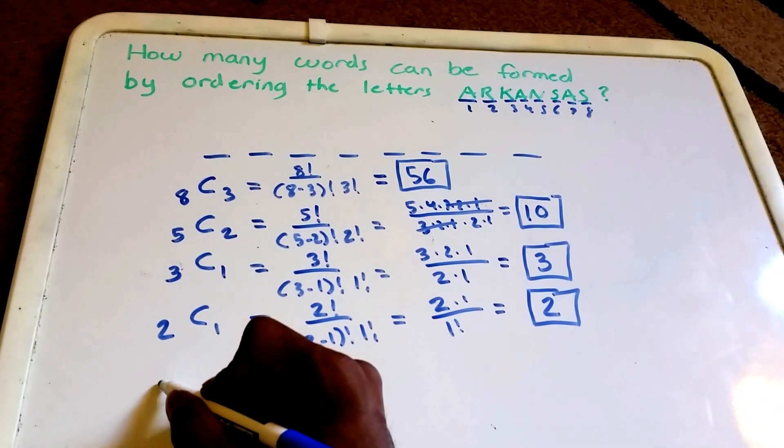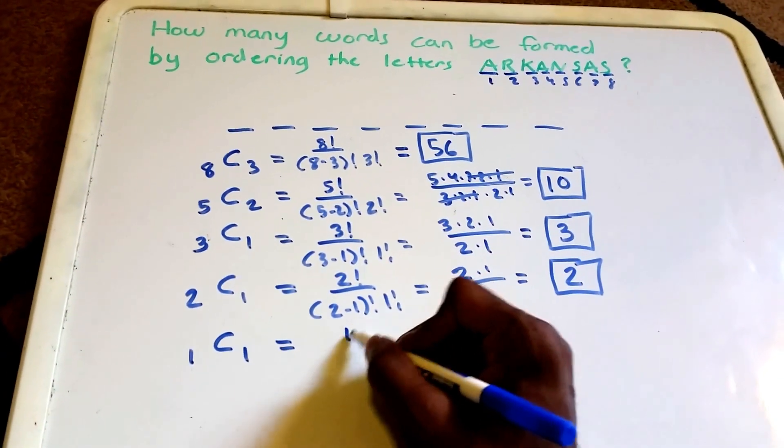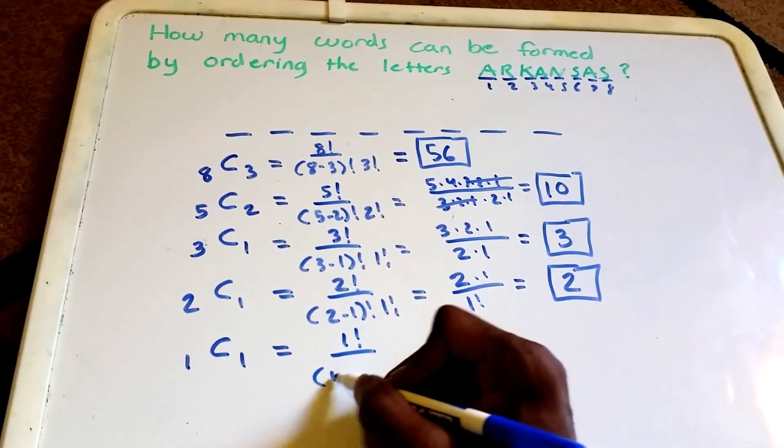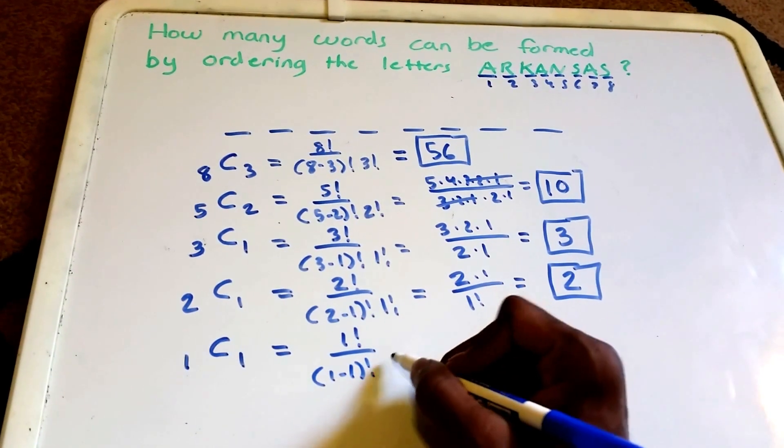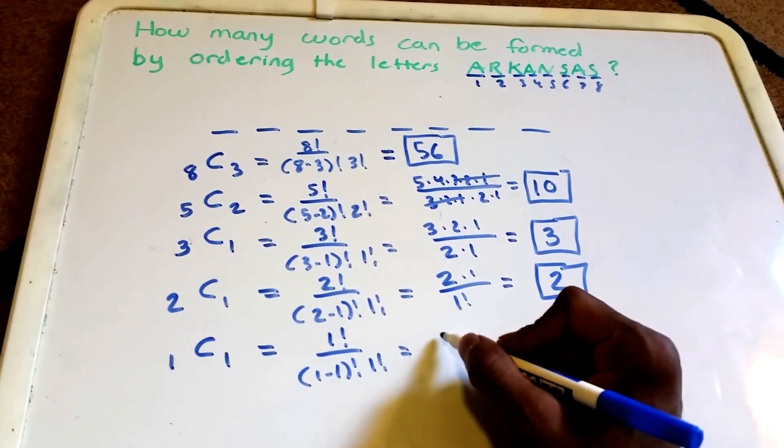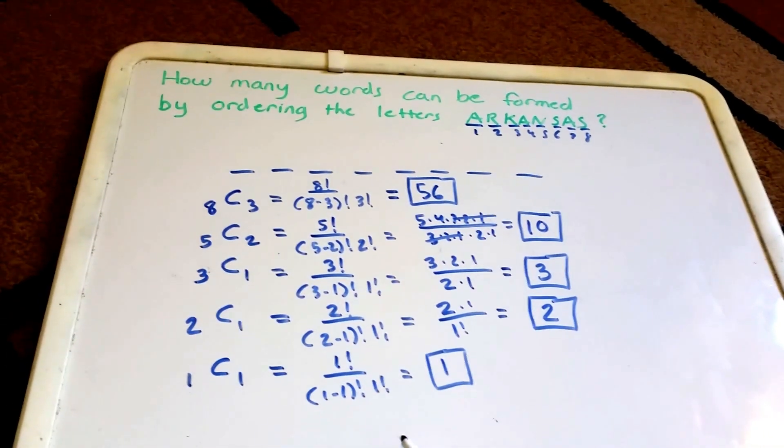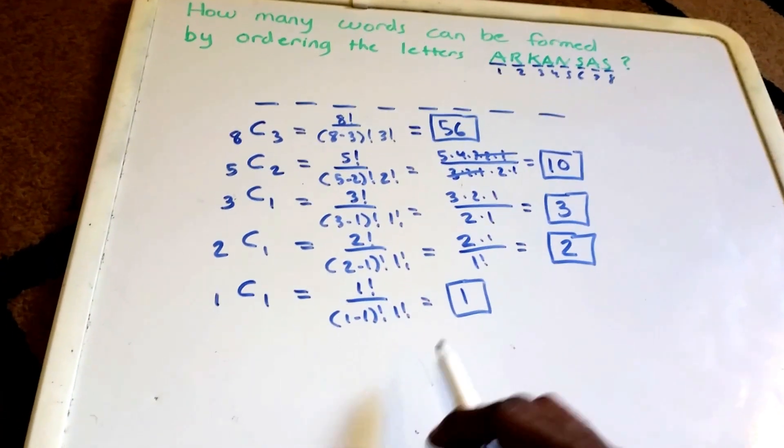There's only one position left, so 1 choose 1, which is equal to 1 factorial over 1 minus 1 factorial times 1 factorial, which is equal to 1. So now our answer...